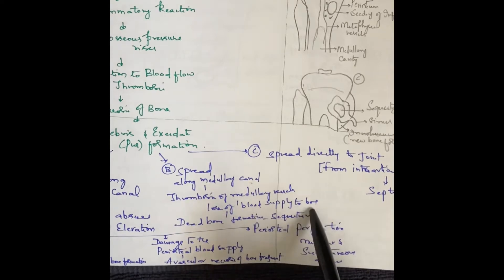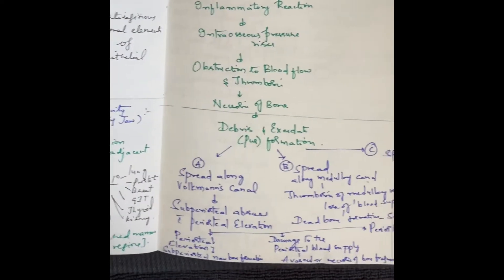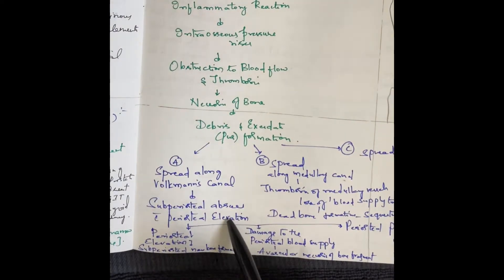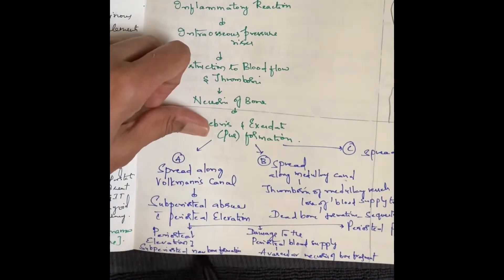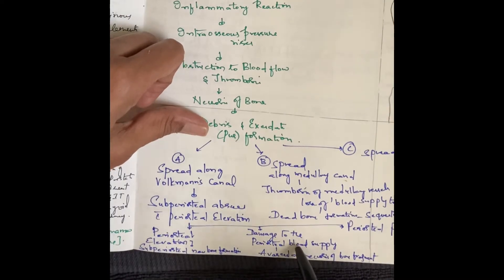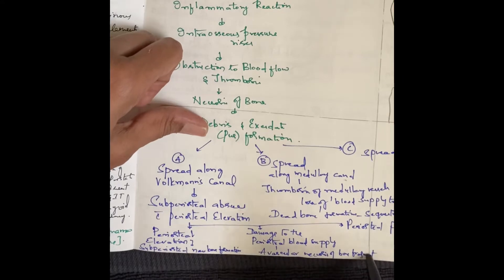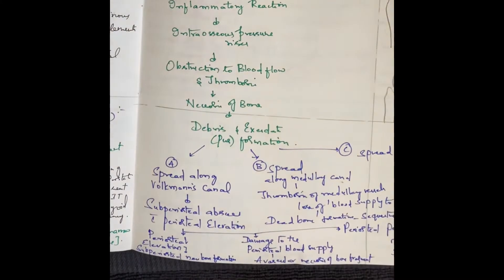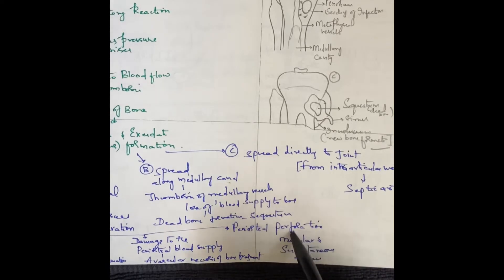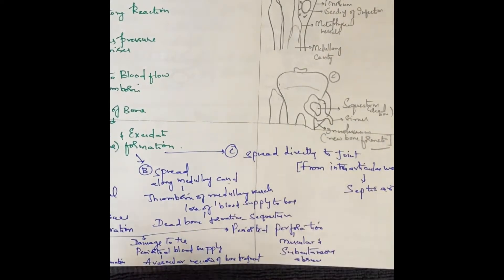There is loss of blood supply to the bone and dead bone formation — that is sequestrum. If it spreads along the Volkmann's canal, there will be subperiosteal abscess with periosteal elevation, leading to subperiosteal new bone formation. There will be damage to the periosteal blood supply leading to avascular necrosis of the bone fragment, periosteal perforation, and the infection spreads to the muscle and subcutaneous region leading to abscess formation.